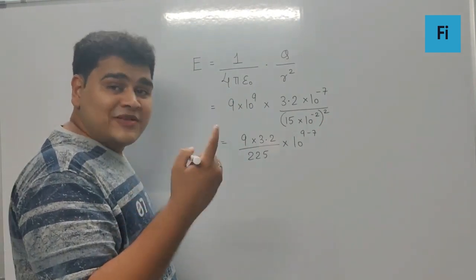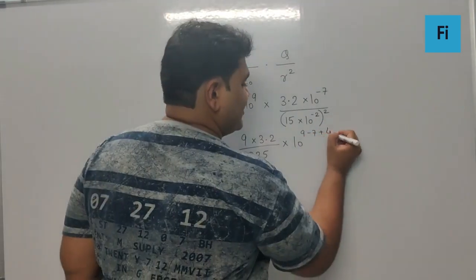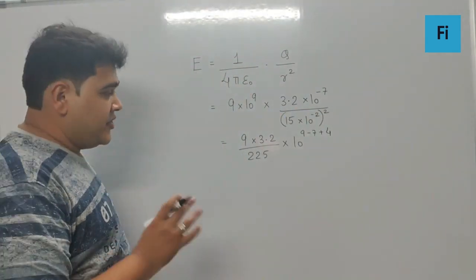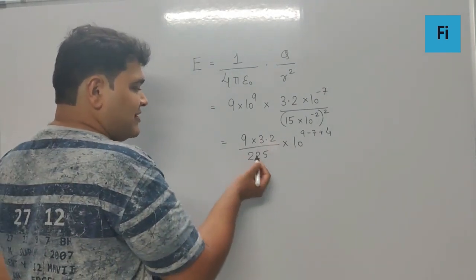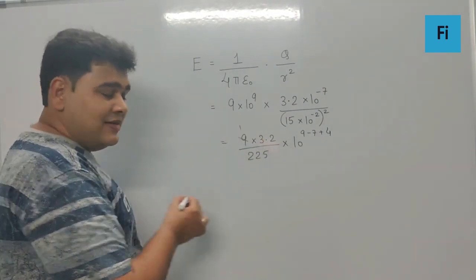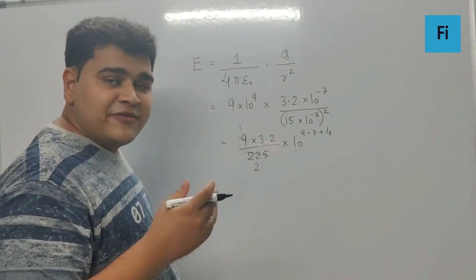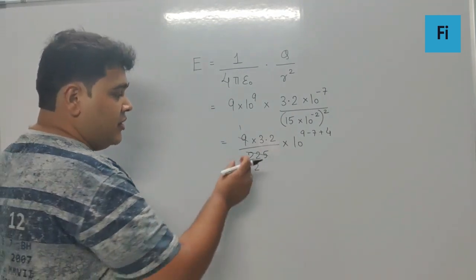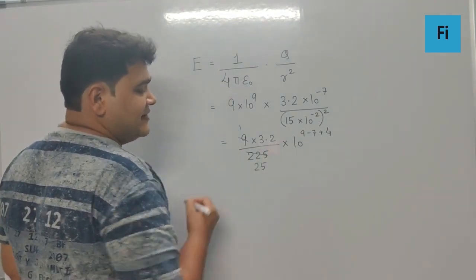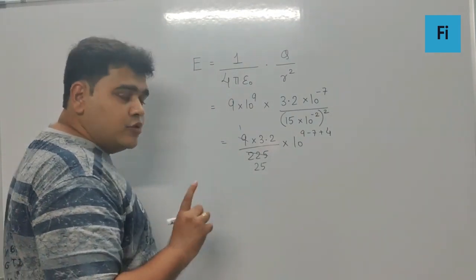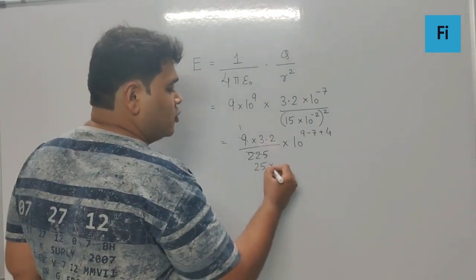Now in this scenario if you try to cancel this out, this 9 cancels out. First of all we are left with 225, so that will be 9 into 45. Now what I'll do is multiply and divide by 4 over here because then the denominator will become 100.